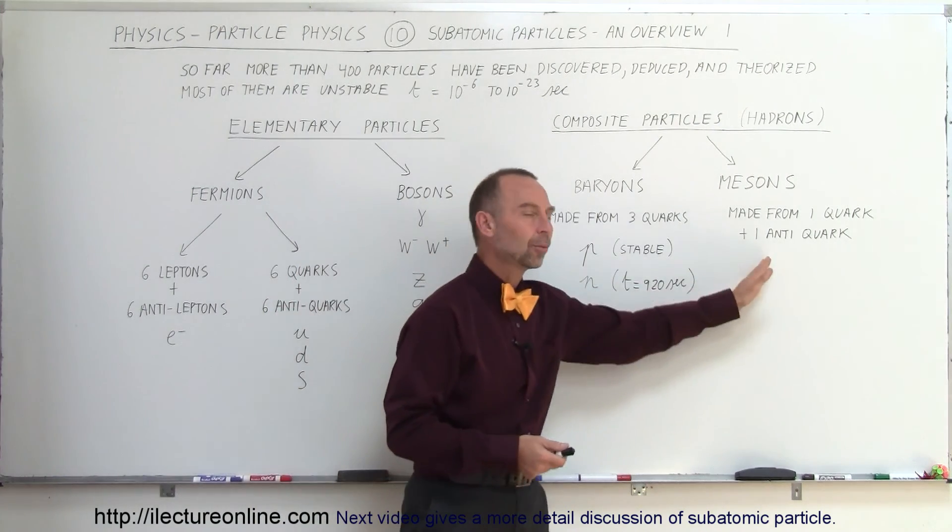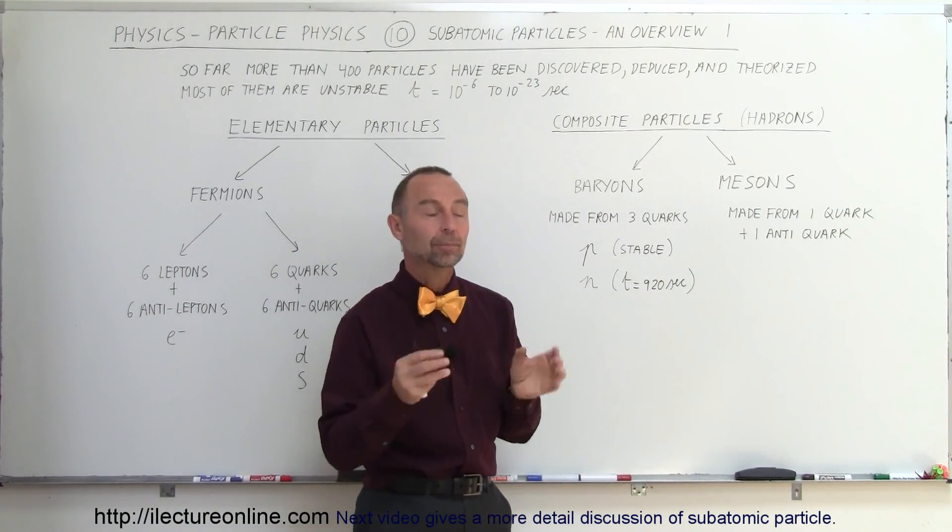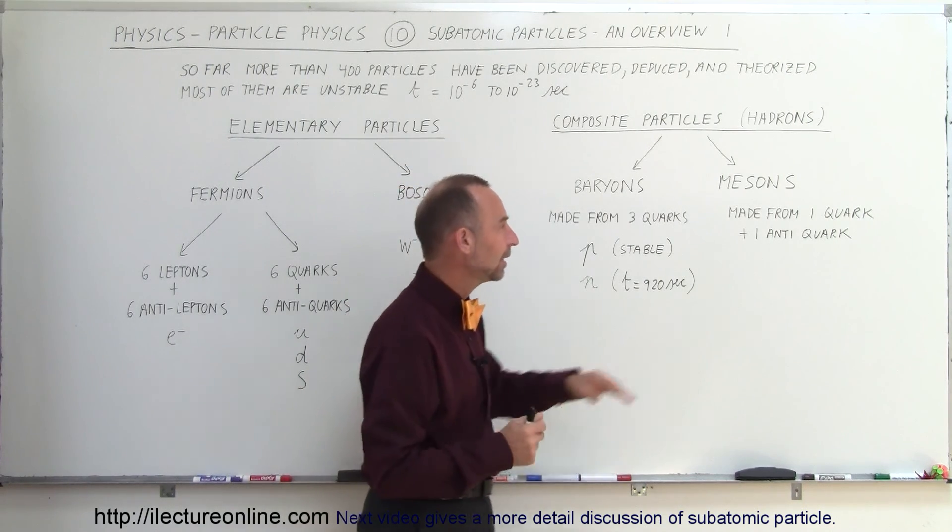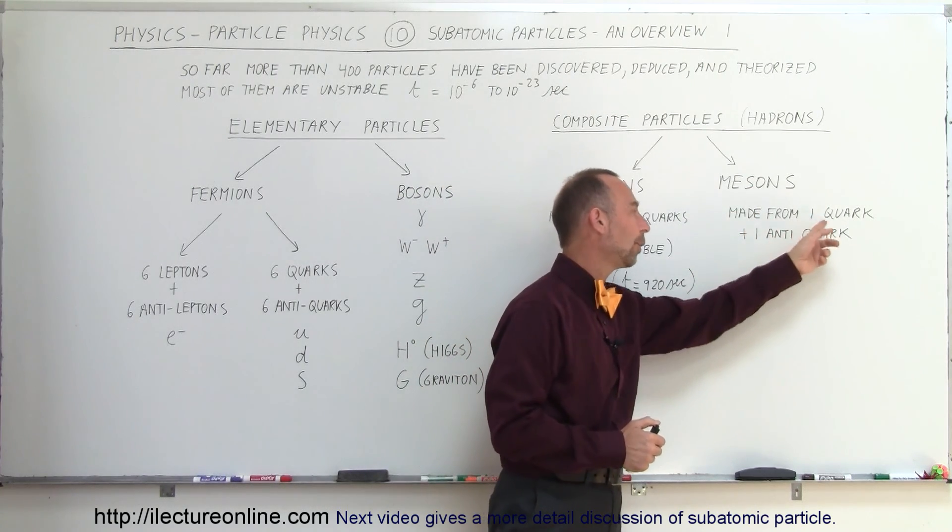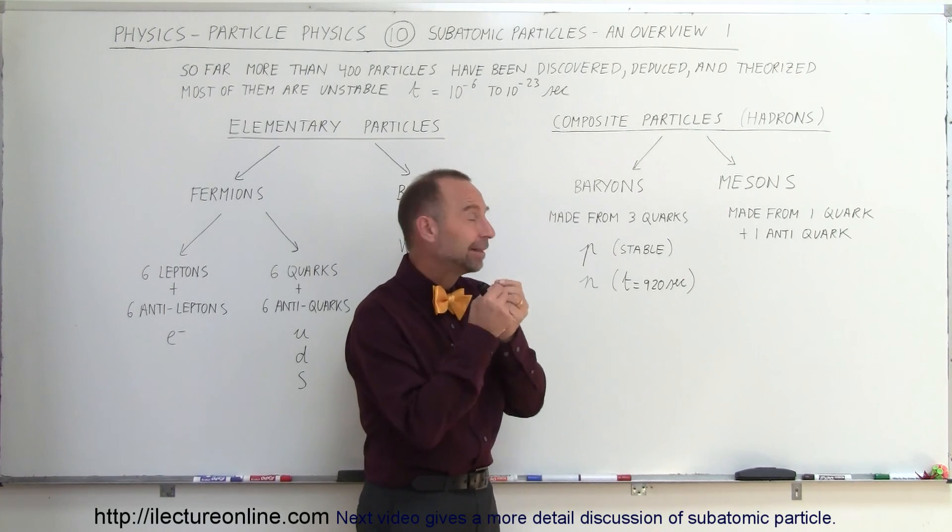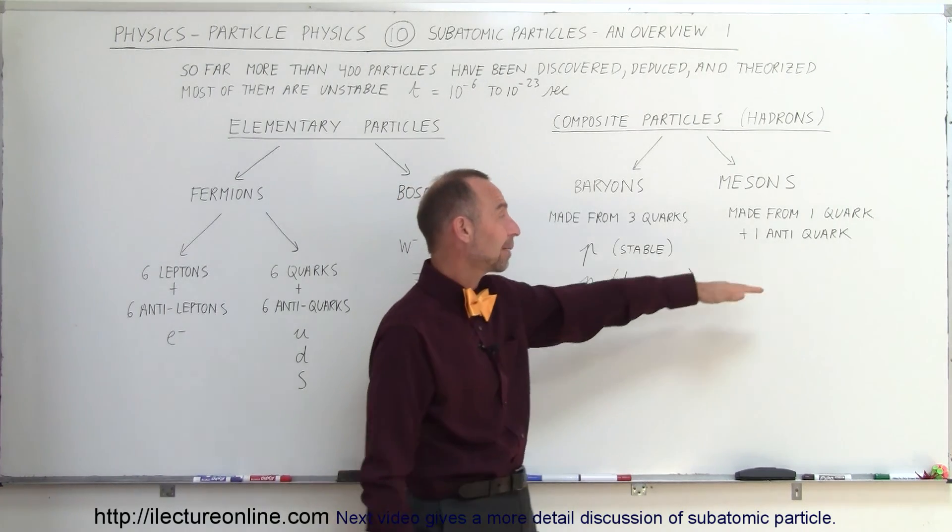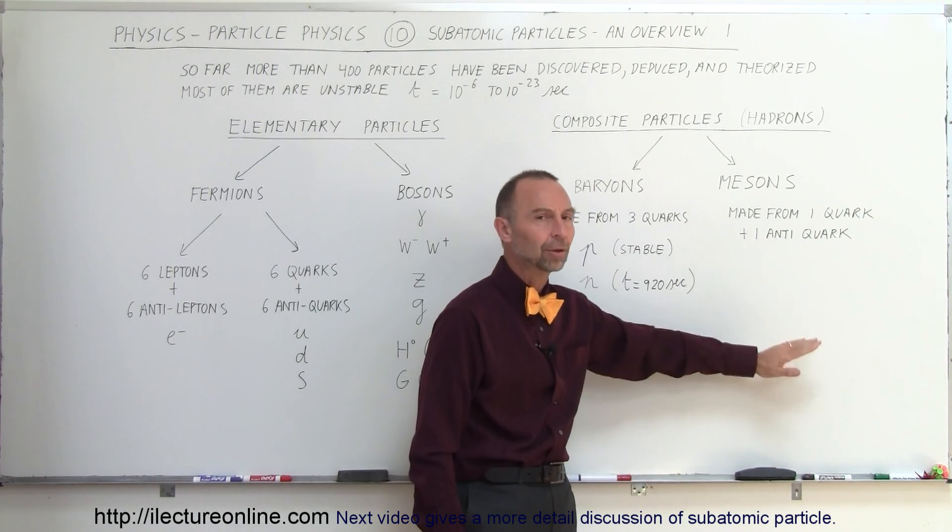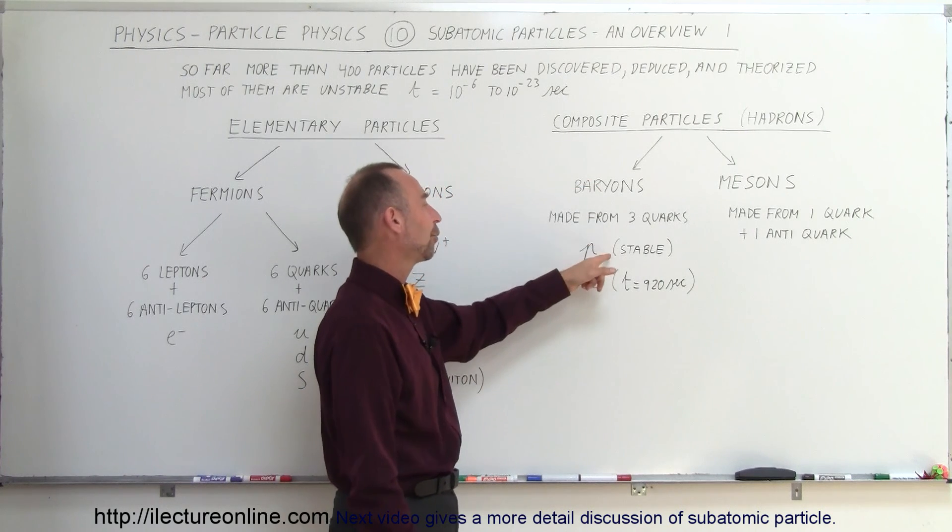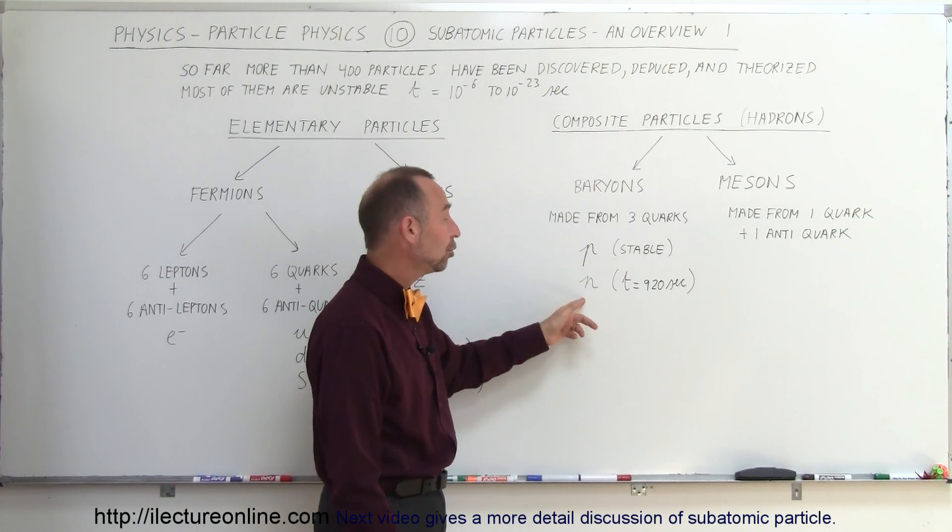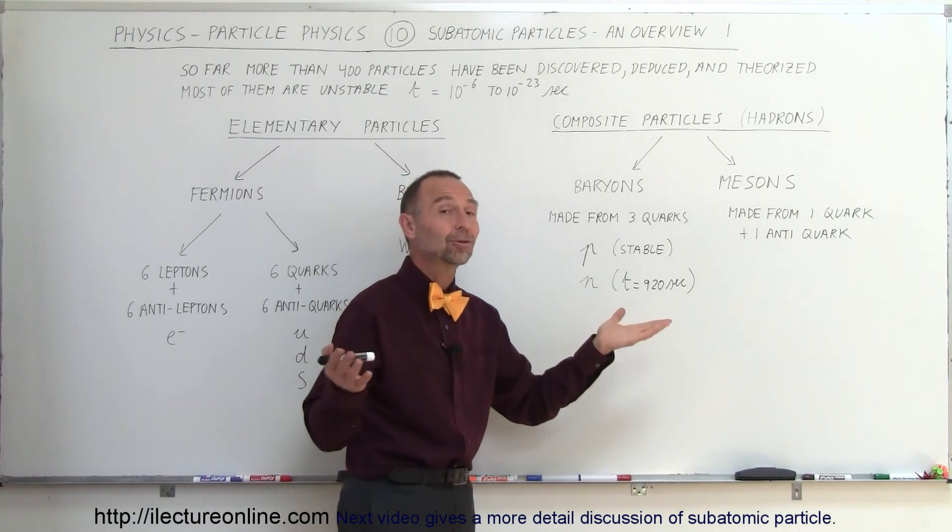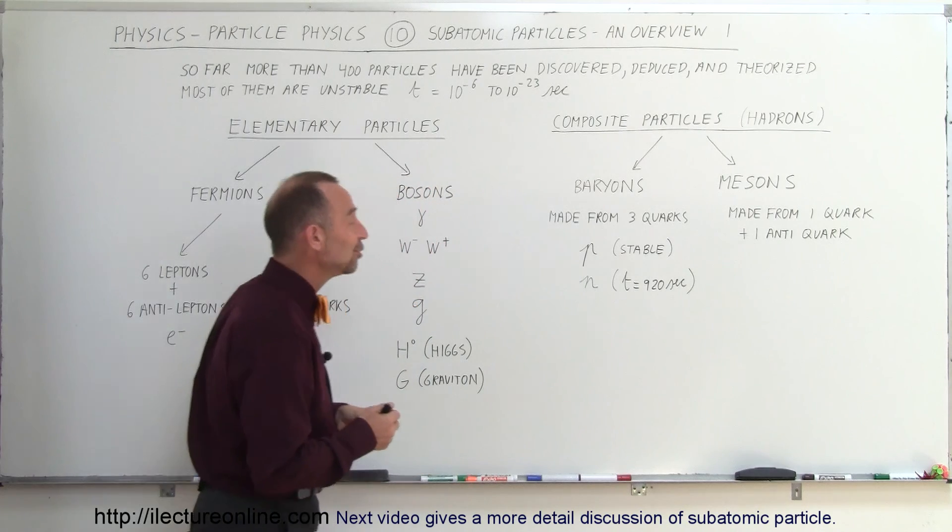Now, the mesons, those are what we call the middle particles, as we call them, because they're not as heavy as protons, but heavier than electrons. They fall somewhere in between. That's why they're called mesons. They're made up of one quark and one anti-quark. That makes them very unstable, and they only typically last a very short amount of time. So we'll find out later that all of the mesons are very unstable, only stick around for a very short period of time. The baryons are all very unstable, except for the proton, which is very stable, and the neutron, which is only stable inside the nucleus, and lasts 920 seconds when it's a free neutron, as we call it.